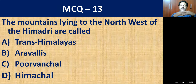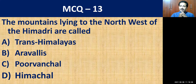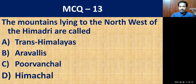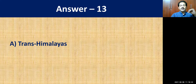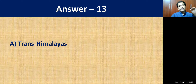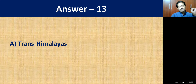MCQ question number thirteen: the mountains lying to the northwest of Himadri are called — Trans-Himalayas, Aravallis, Purvanchal, or Himachal? The correct answer is Trans-Himalaya. Here you have the Karakoram range, and India's highest peak K2 or Mount Godwin Austin with a height of 8,611 meters.